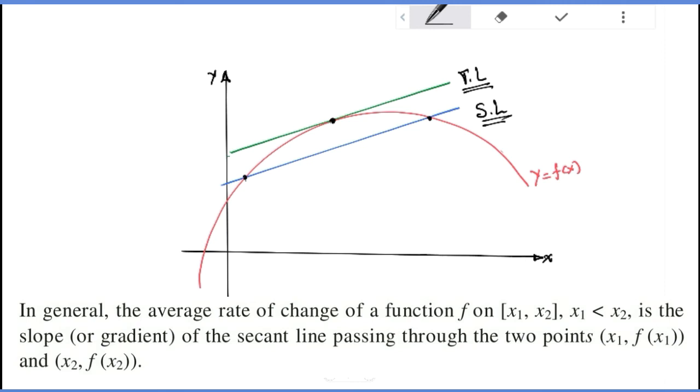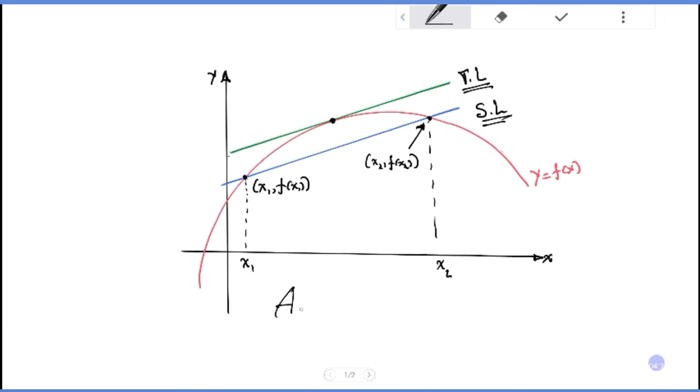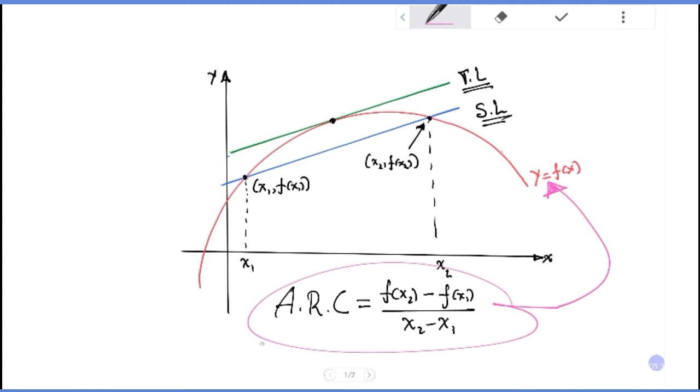This is the average rate of change of y on the interval [1,2]. In general, it is the slope or gradient of the secant line passing through the two points (x1, f of x1) and (x2, f of x2). This is the average rate of change of the function from x1 to x2.